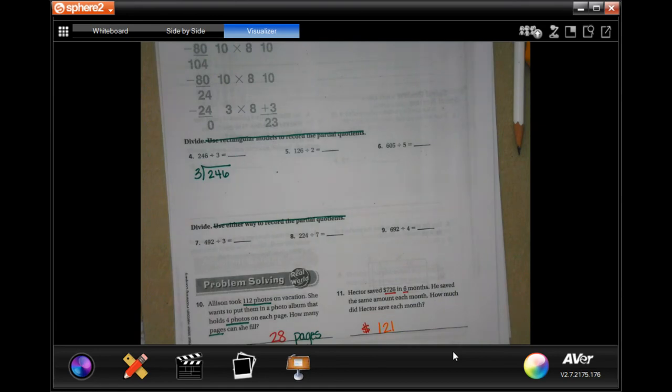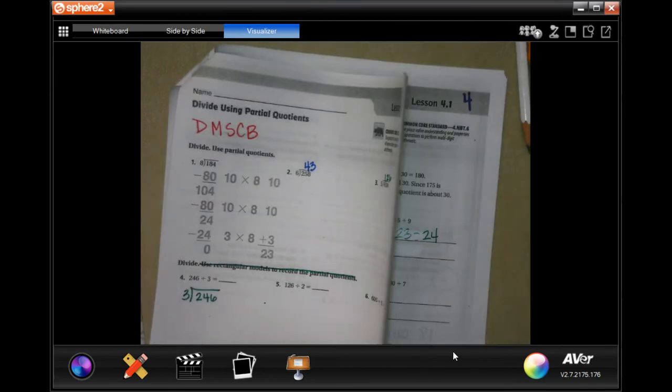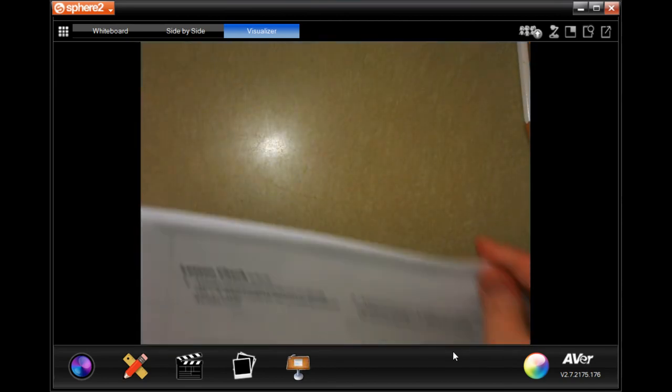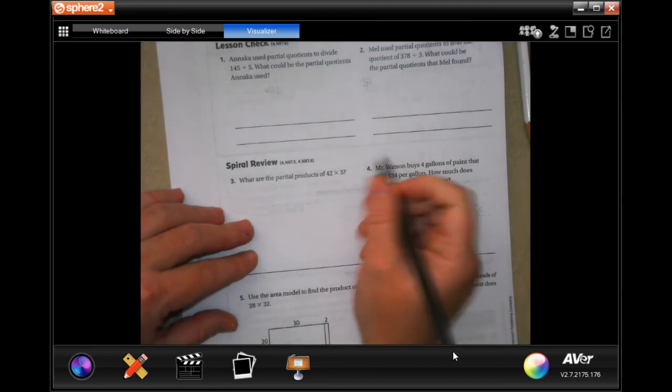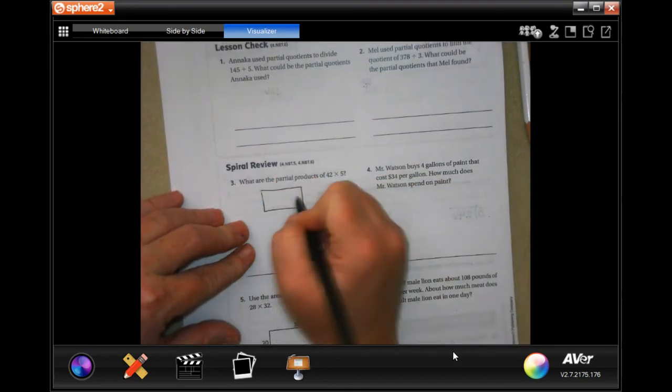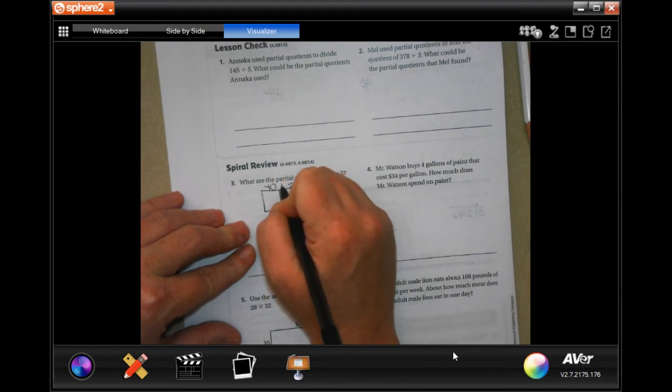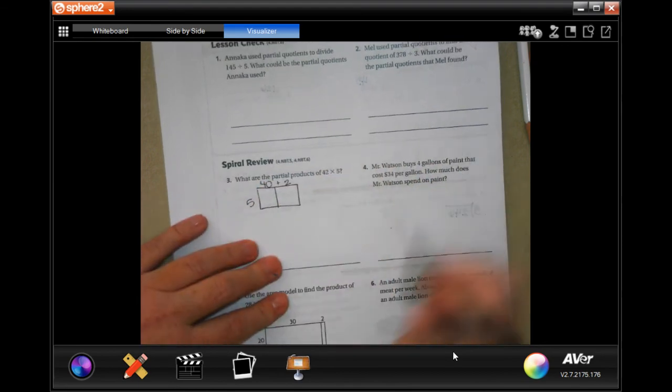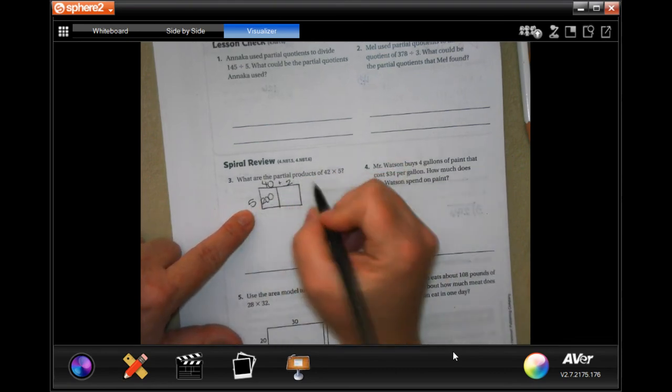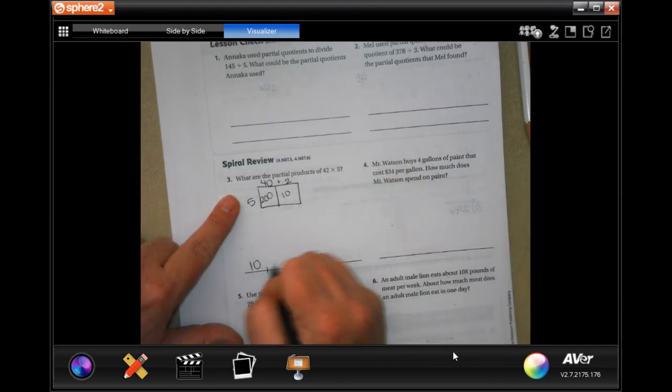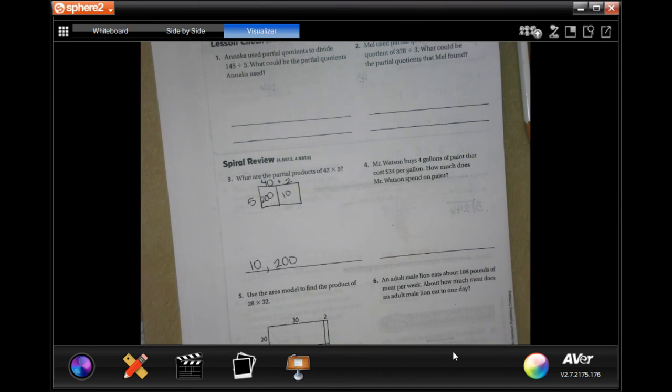We're going to go over to the back where you guys will do the lesson check just like always, and we're going to do the spiral review. This says: what are the partial products of 42 times 5? Which is just if we get the box: 40 plus 2, and then 5 on the side. So 5 times 4 is 20, add that extra zero in, and 5 times 2 is 10. So 10 and 200. That's it. Don't make it harder than it's got to be.